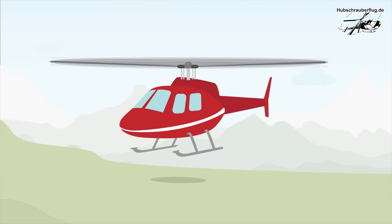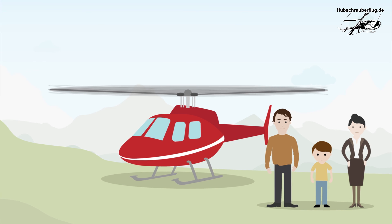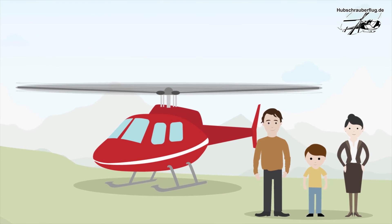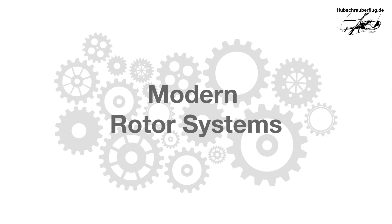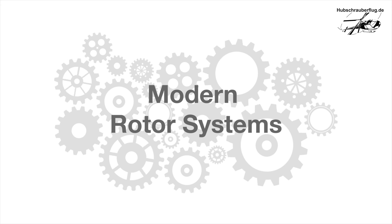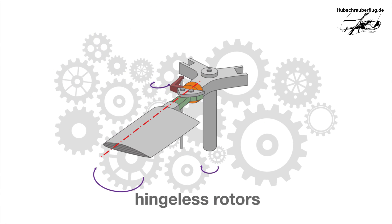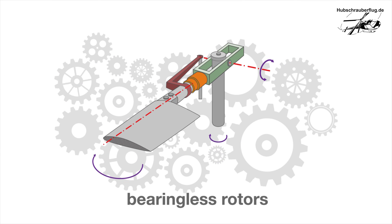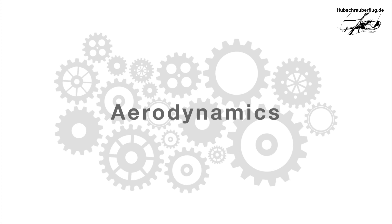Here's how you fly a helicopter. Before you sit in the pilot's seat, we want to show you how helicopters work and how they fly. We'll start with the main rotor. We can divide modern rotor systems into the following categories: articulated rotor systems, hingeless rotor systems, and bearingless or semi-rigid rotor systems.